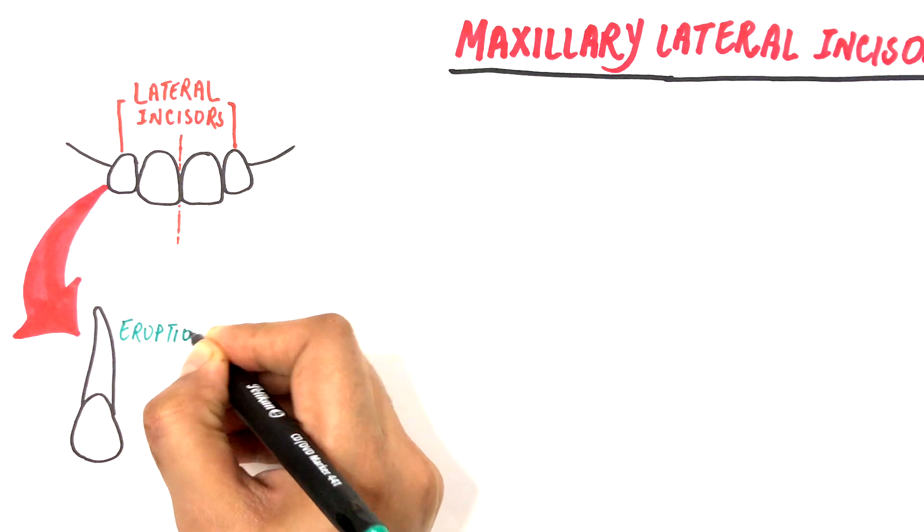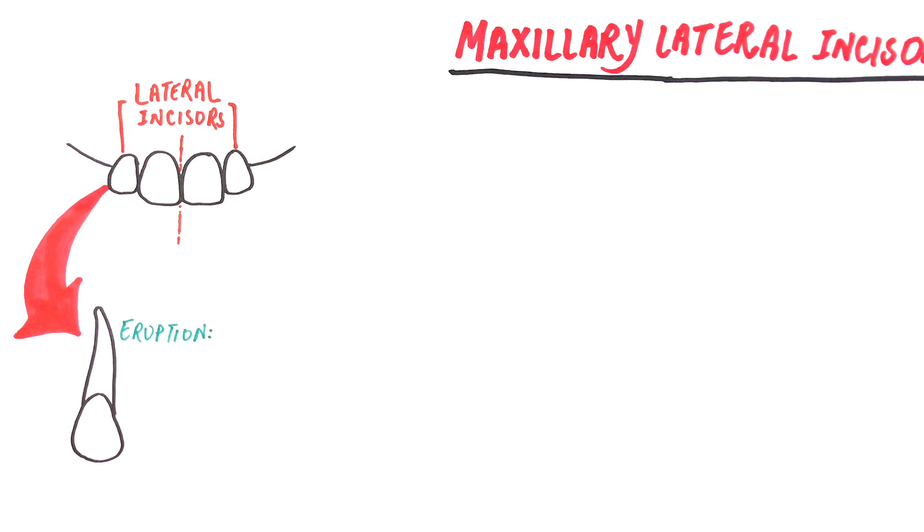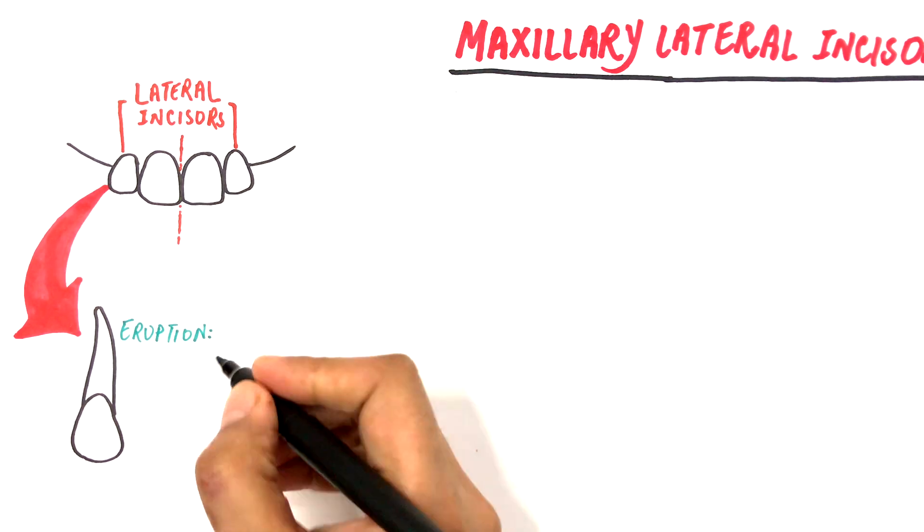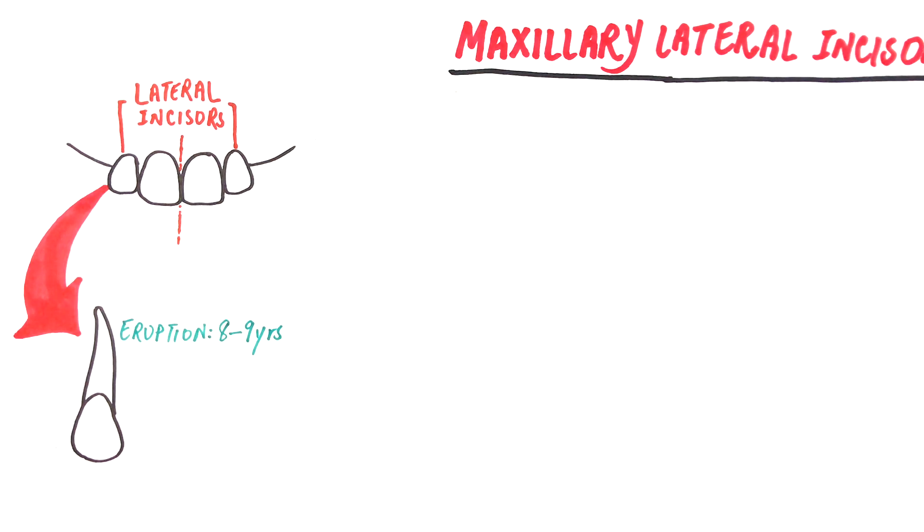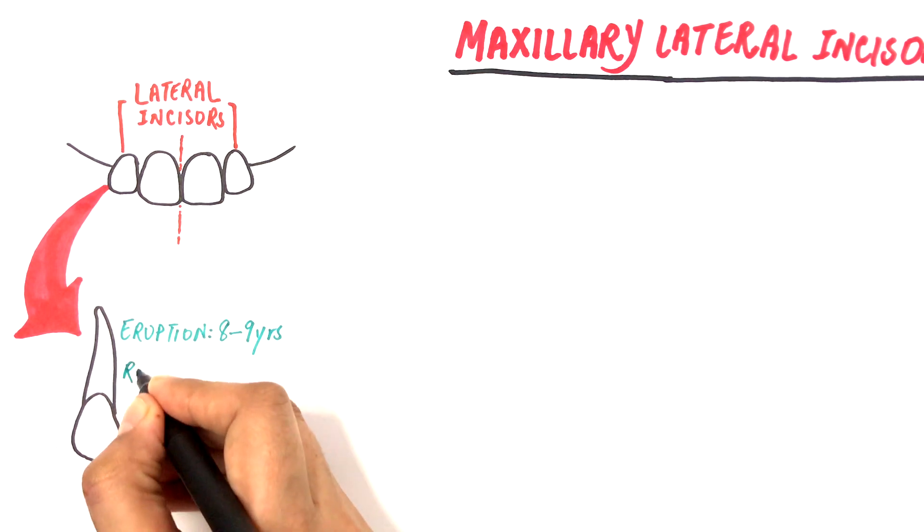Maxillary lateral incisor erupts at about the age of eight to nine years and its root is completed at about the age of 11 years.